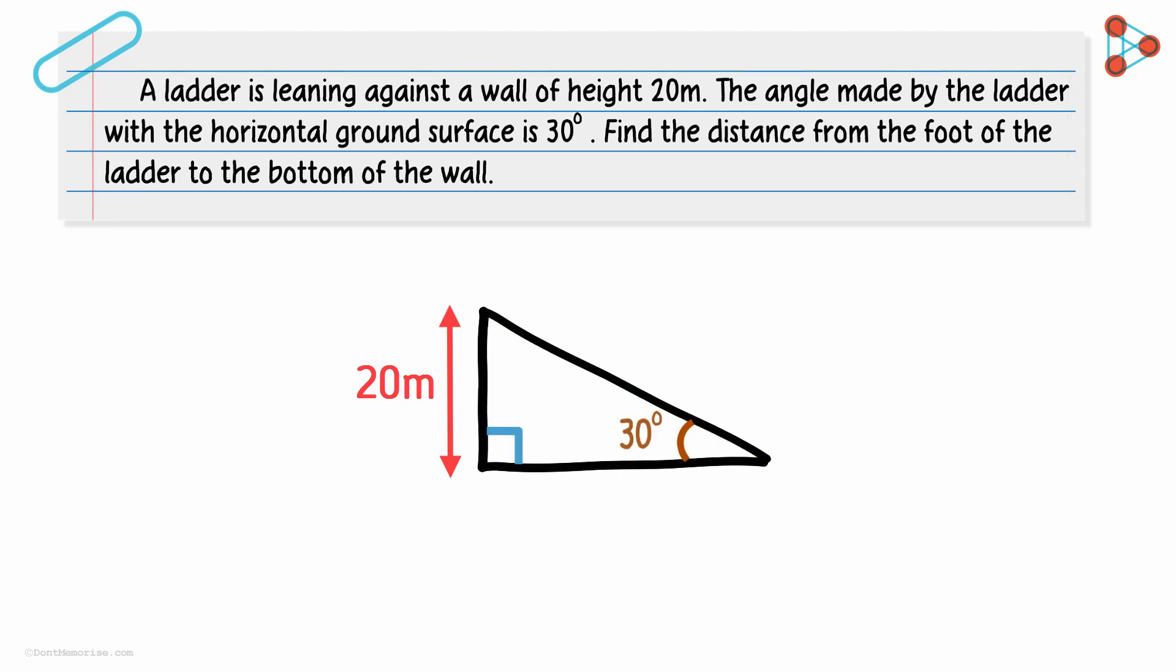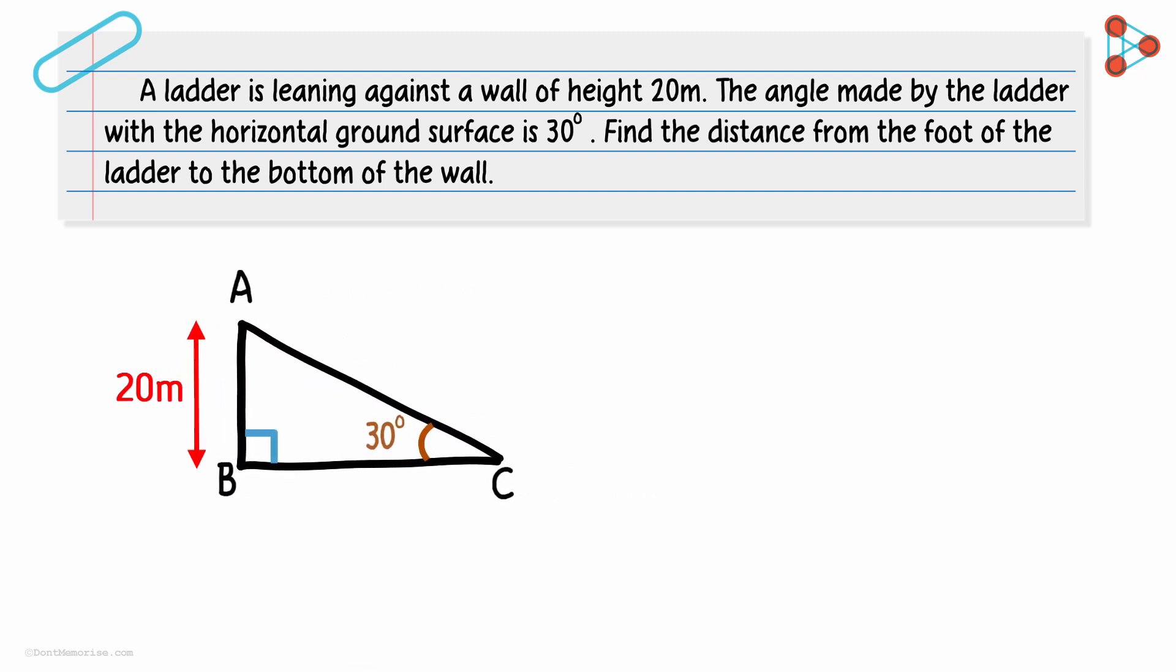Let us name its vertices as A, B, and C. Let us solve this quickly now. We are given the measure of angle C here and we are also given the length of its opposite side AB.